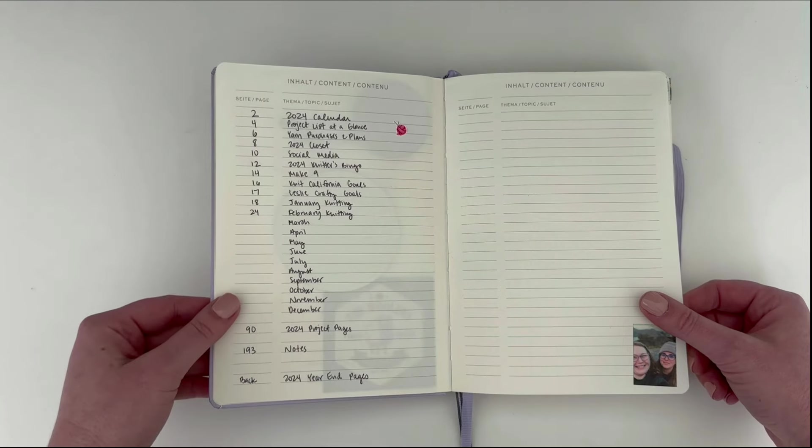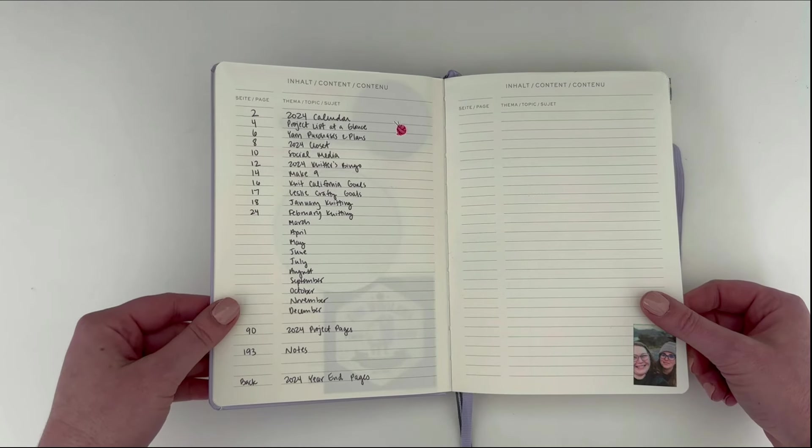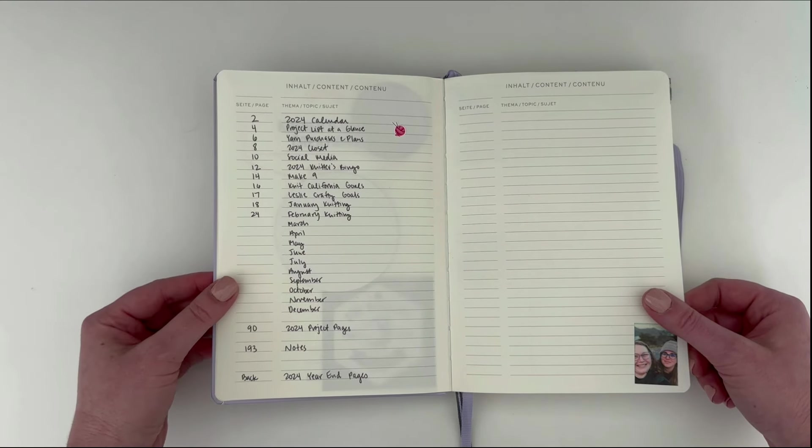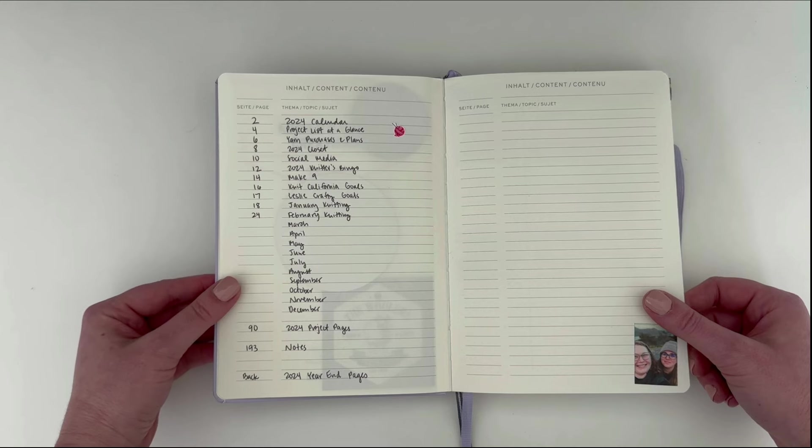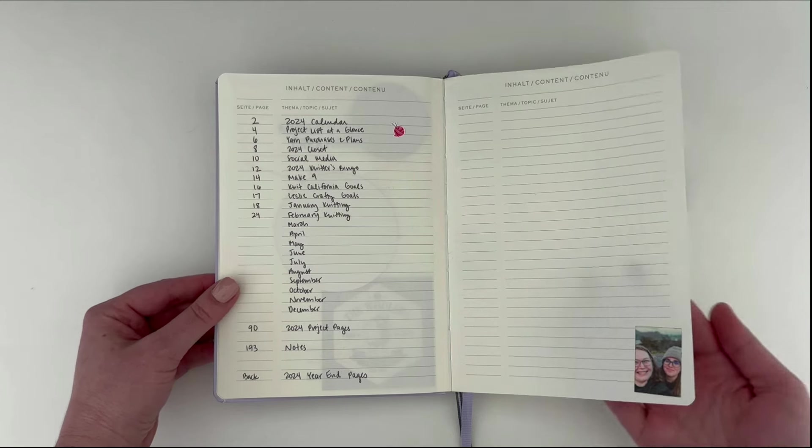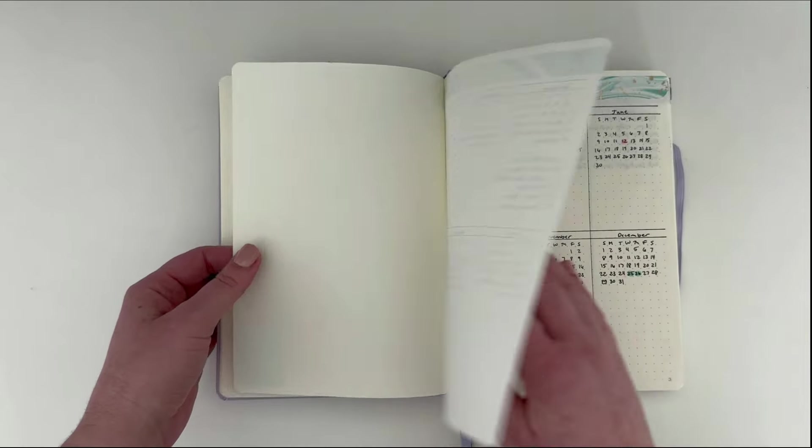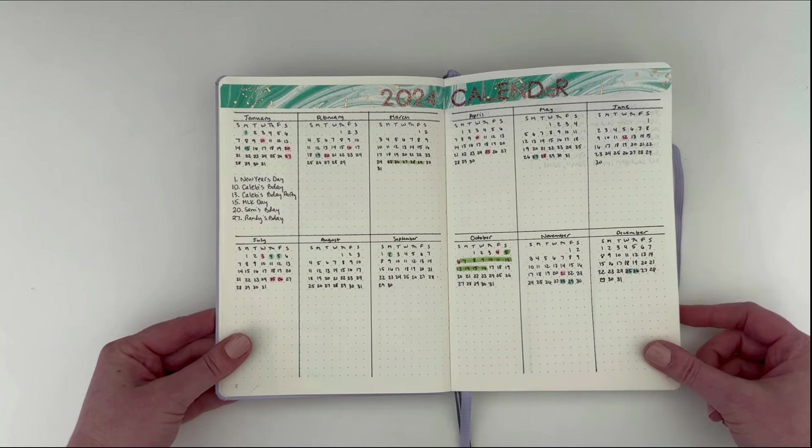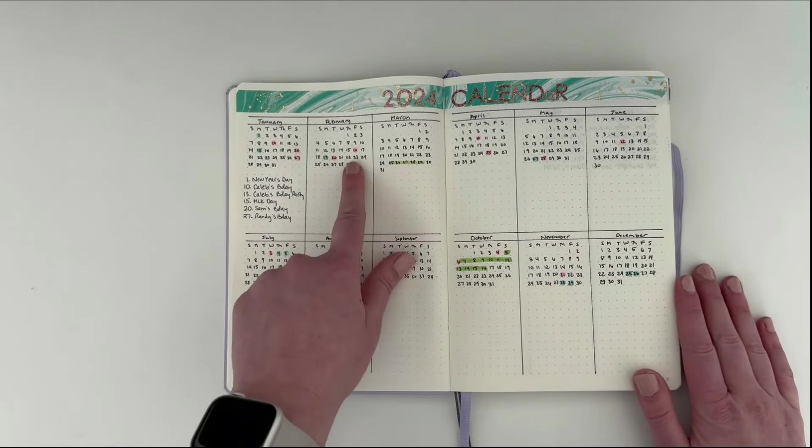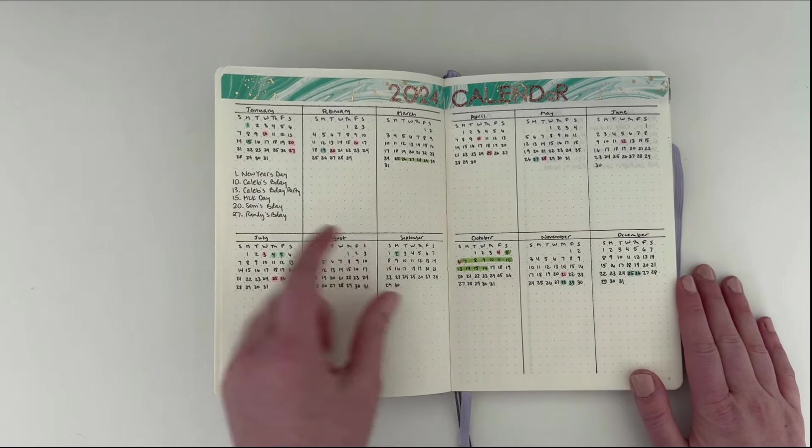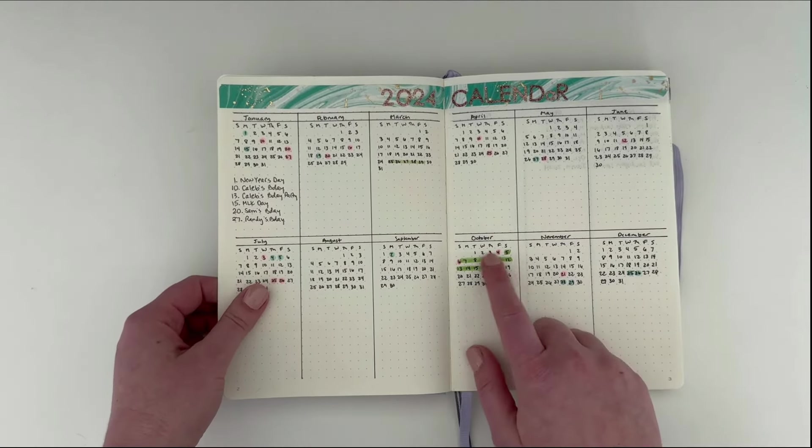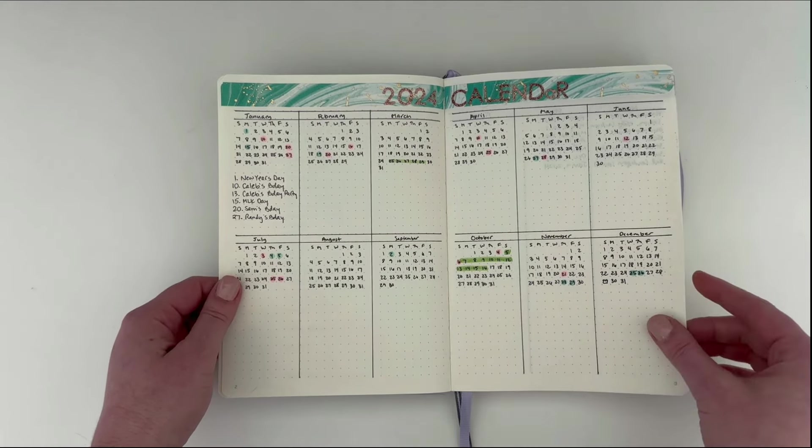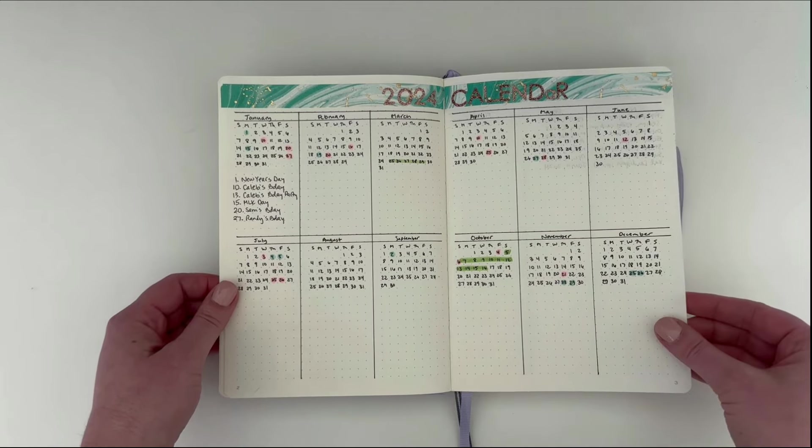I kept the table of contents page in here this year. I did not keep this in last year's journal and I just wanted to see if I would use it this year. Then we get to my 2024 calendar. I'm gonna use this as an at-a-glance calendar to see when my holidays are, my long weekends, and any trips that we plan. You can see the October Irish knitting tour I already have blocked off in October.